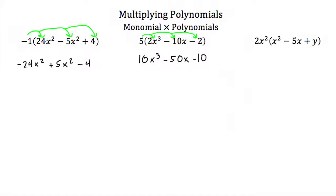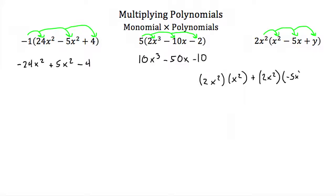This also works when we have a monomial outside. We have 2x squared and we want to multiply everything inside the parentheses by 2x squared. So we would have 2x squared times x squared, added to 2x squared times negative 5x, added to 2x squared times y. Just like multiplying two monomials together, we do that three times. 2x squared times x squared is the same as 2 times x squared times x squared, and that would be 2x to the fourth.